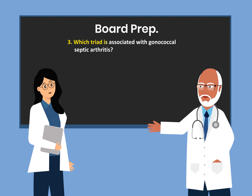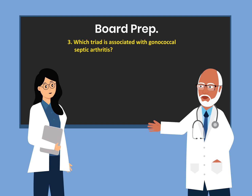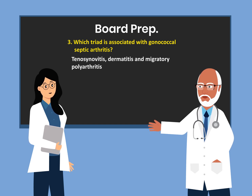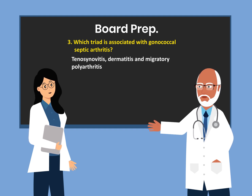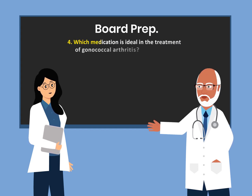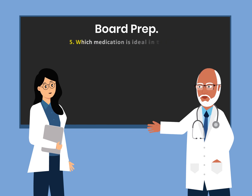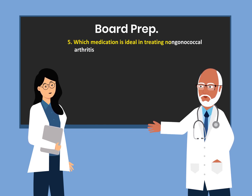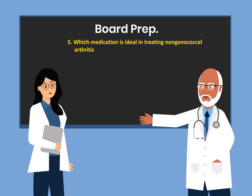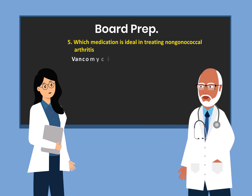Which triad is associated with gonococcal septic arthritis? Tenosynovitis, dermatitis, and migratory polyarthritis. Which medication is ideal in treating gonococcal arthritis? Ceftriaxone. Which medication is ideal in treating non-gonococcal arthritis? Vancomycin.